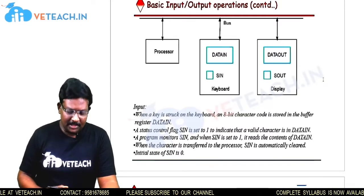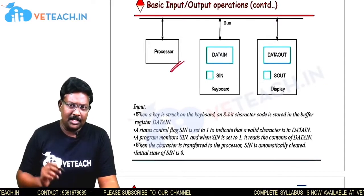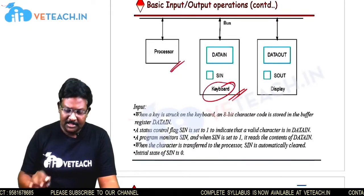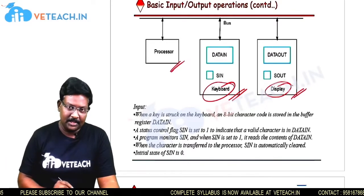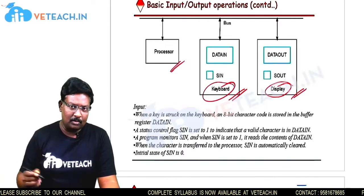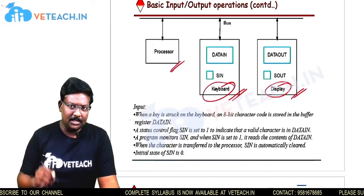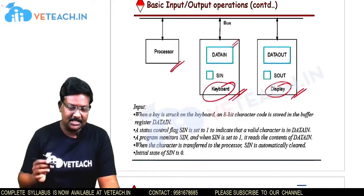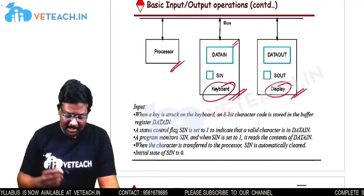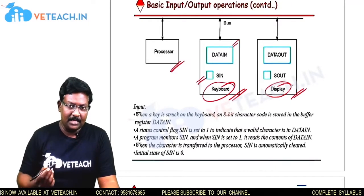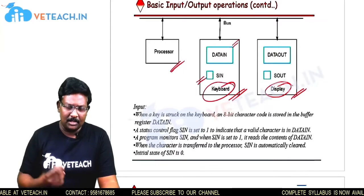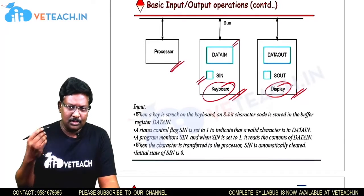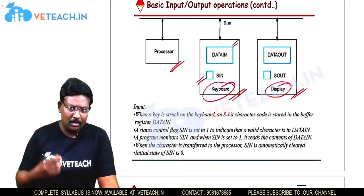In this diagram, we have a processor connected to an input device. I have taken a keyboard as the input device and a display unit as the output device. In the input device, we have a data-in register, which holds binary information, and a SIN flag, which holds either 0 or 1 at any time. SIN is a checking flag that shows the status of the keyboard or input device.